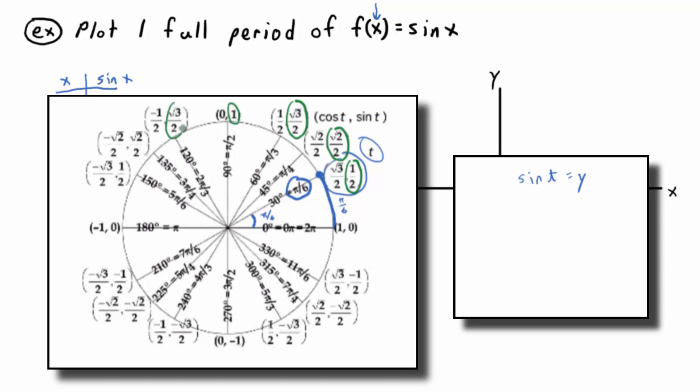So all of these y values in all of these output points represent output values for the sine function. We're only going to graph a few of them, but all of them represent output values. In other words, if the input is 0, the output is 0. If the input is π/6, the output is 1/2. For the sine function, if the input is 0, the output is 1.